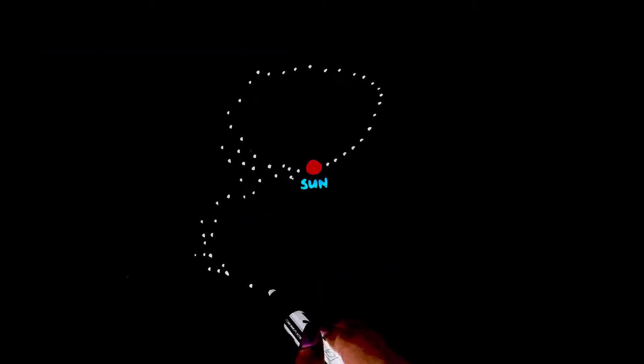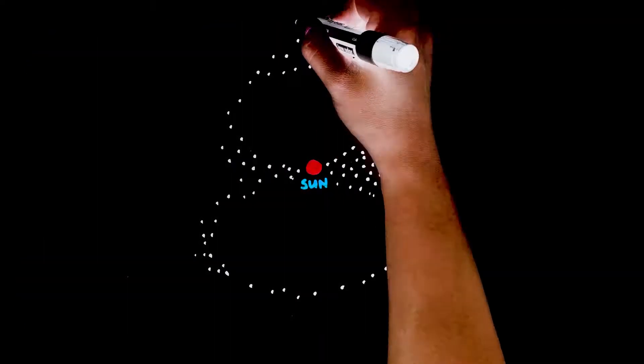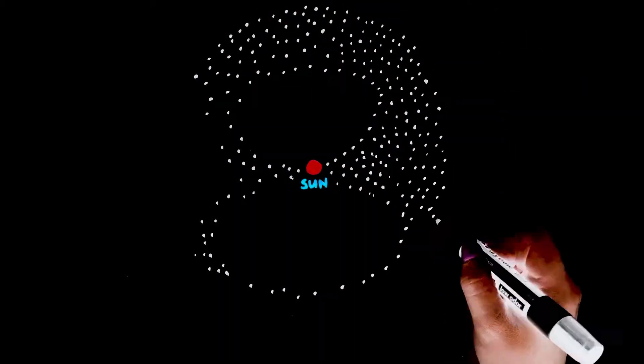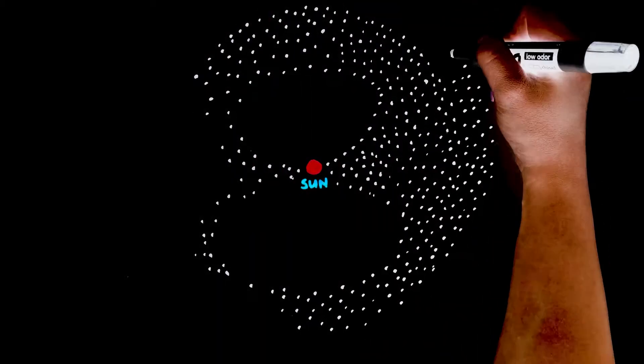Surrounding the Sun is a theoretical spherical cloud of icy debris left over from the formation of the solar system 4.5 billion years ago called the Oort Cloud.